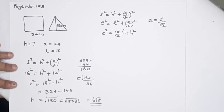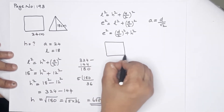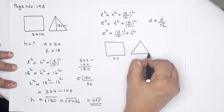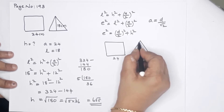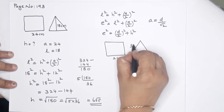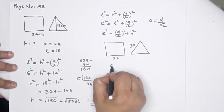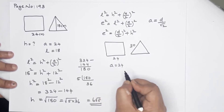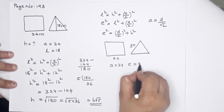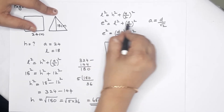Now let's look at a different question. The base edge A is 24, but this is a different triangle — the slant height is 18 and the lateral edge E is 30. So A = 24 and E = 30. Here A and E are in a relationship, and L is also in a relationship.